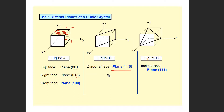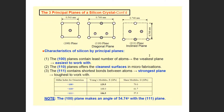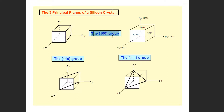In a diagonal plane, we have two non-zero values and one zero — that is the (1,1,0) plane. For an inclined plane, all three values are non-zero. We have different groups: the (1,0,0) group, the (1,1,0) group, and the (1,1,1) group. In these three groups, we define the different types of planes and structures.